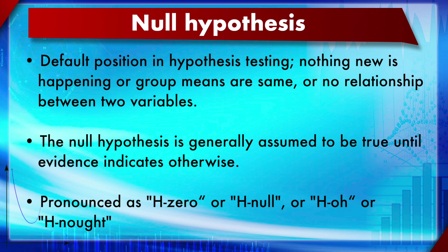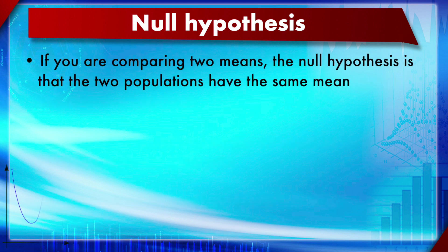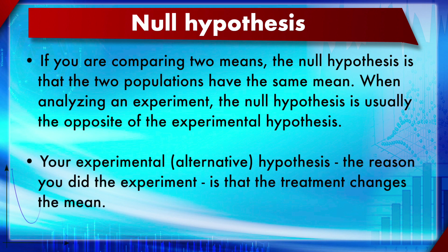The null hypothesis is the default position in any statistical significance testing — nothing new is happening. If comparing means of two groups, the null hypothesis is that the means are the same, or there is no difference, no correlation, no regression, or the proportion is 1. The null hypothesis is generally assumed to be true until evidence indicates otherwise, and it is written as H0.